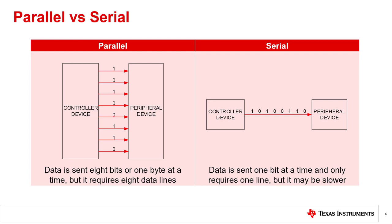For precision data converters, most use forms of serial communication. Most TI devices use one of two different serial interface standards: either four-wire Serial Peripheral Interface, SPI, or two-wire I2C. This presentation discusses SPI and its implementation; I2C is discussed in a different presentation.